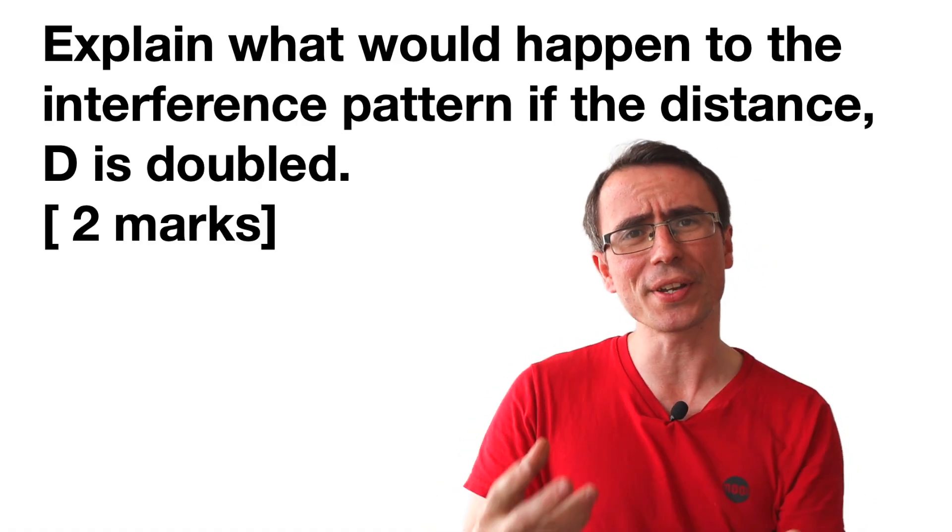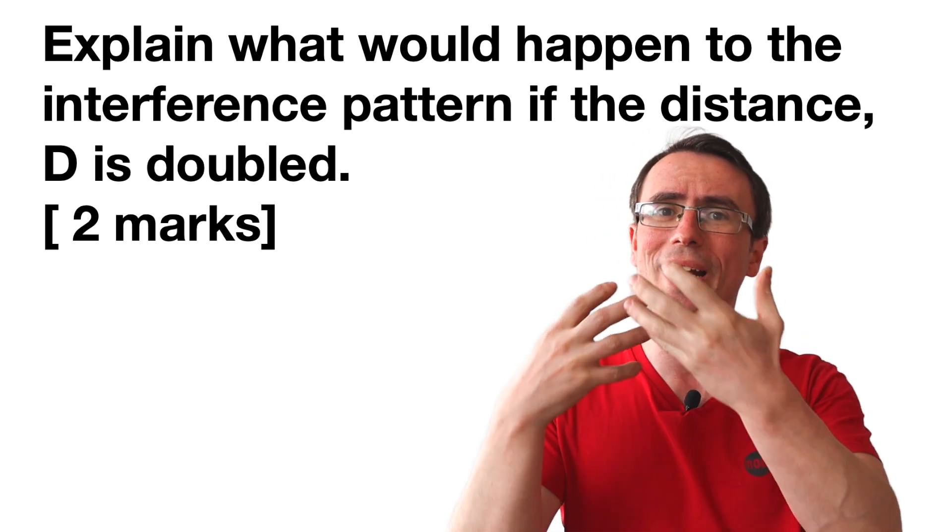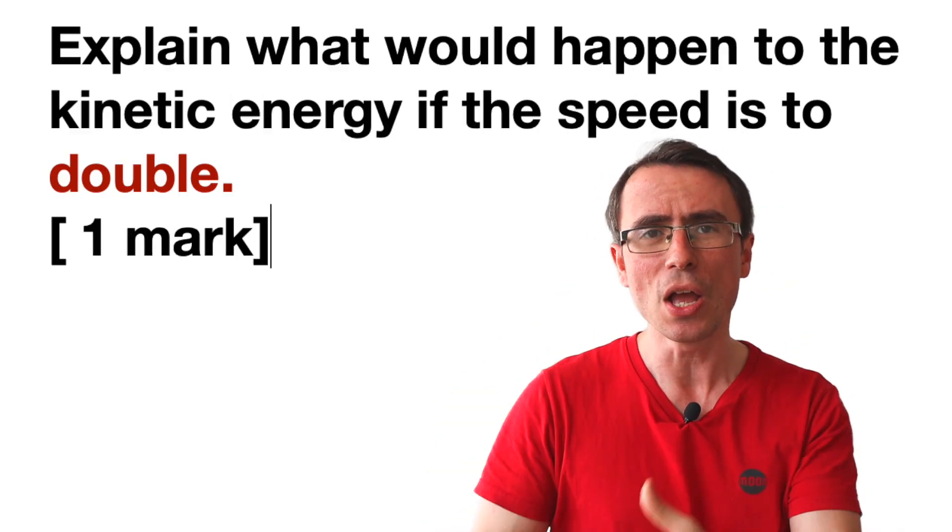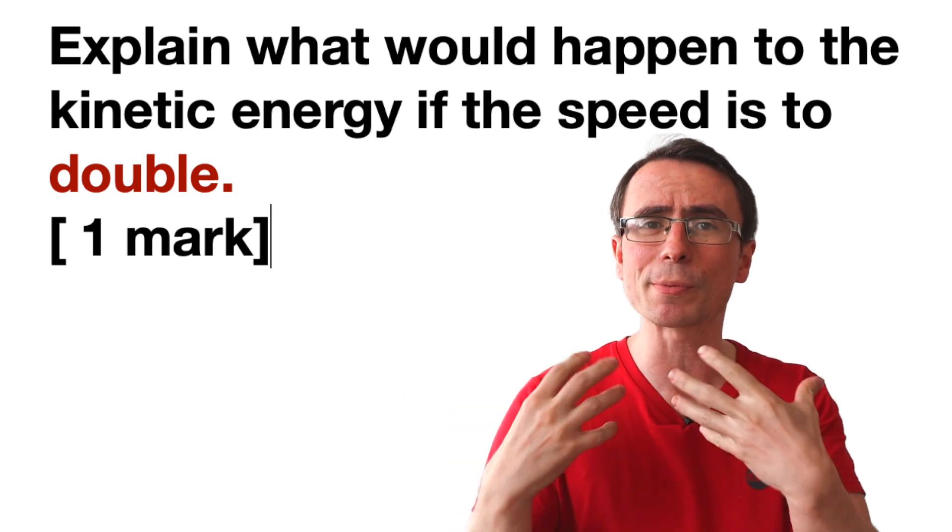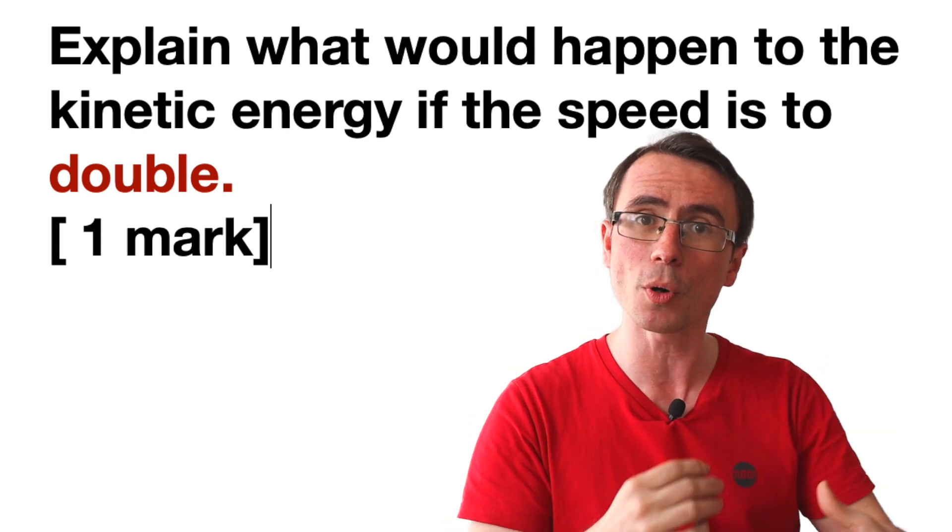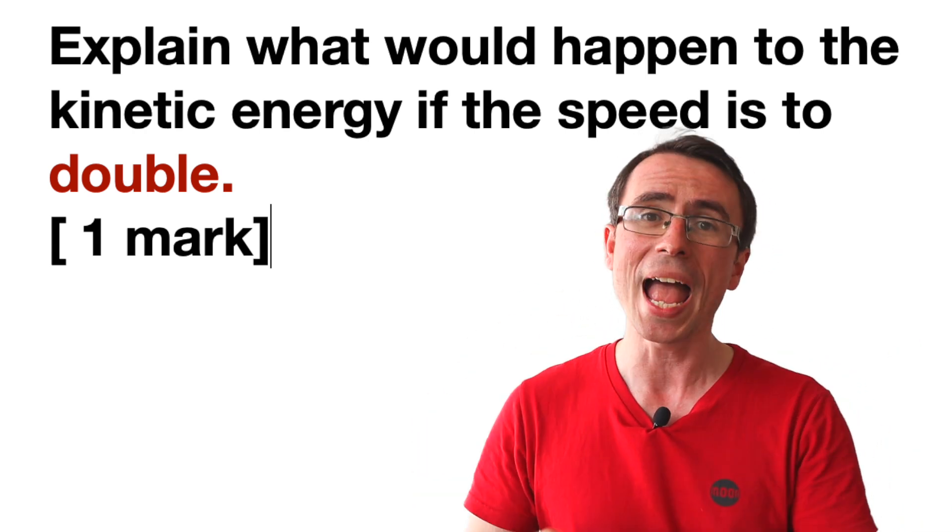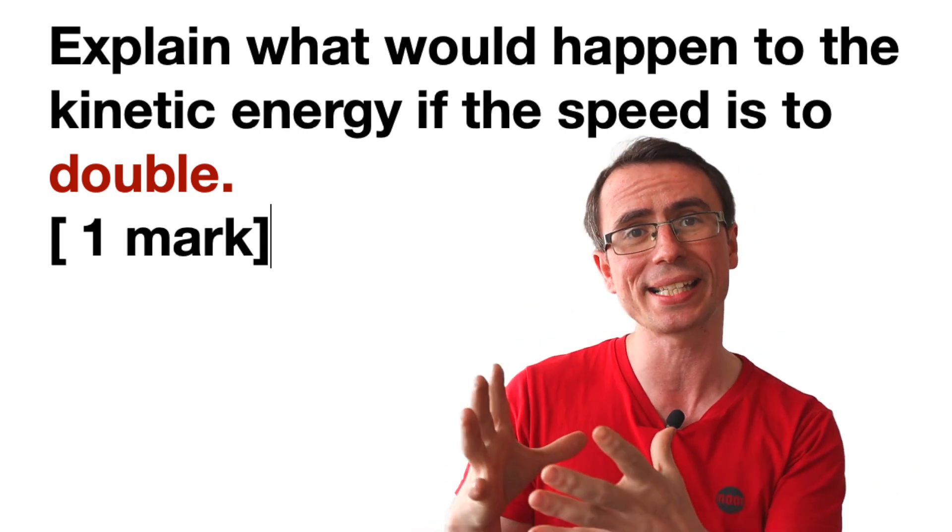If a question gives you a specific number or a specific value, this means that you need to do a calculation in your answer. For instance, if the speed of an object was to double, the key word here being double, the kinetic energy will increase by a factor of four and the mark scheme will expect that exact value.